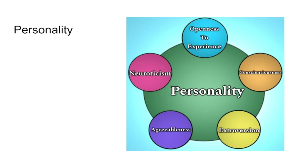The fourth factor is agreeableness. On a scale of 1 to 10, people who are argumentative and difficult are at the low end, and people who are really agreeable are at the high end. Obviously you don't want someone who's too argumentative and hard to get along with, but nor do you want someone who's just a yes man. You need a personality that fits somewhere in the middle.